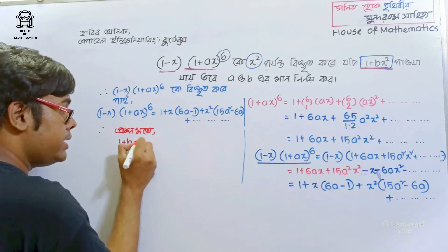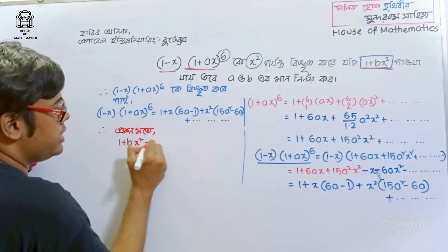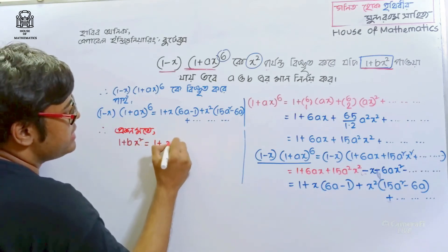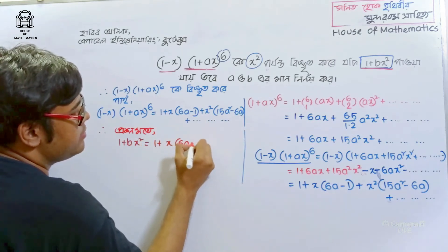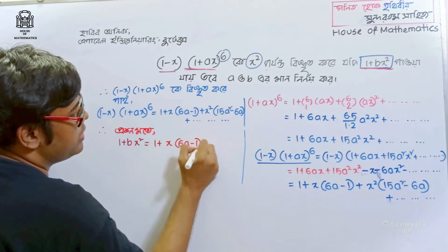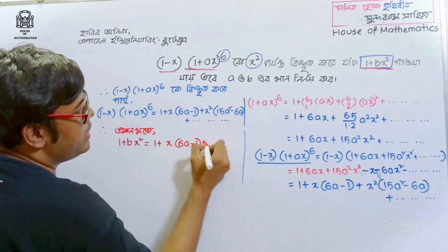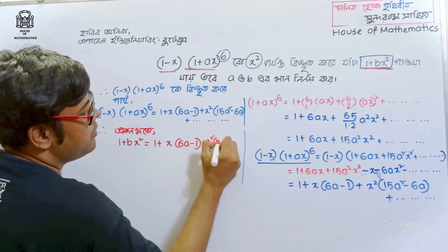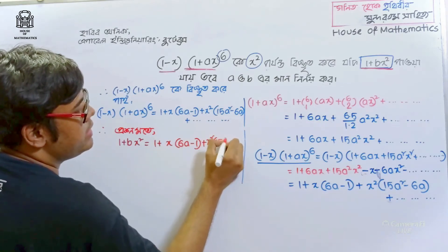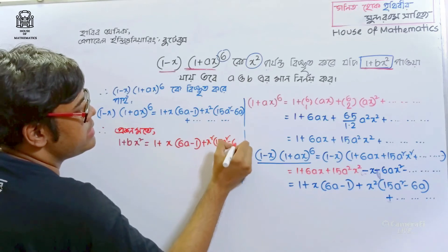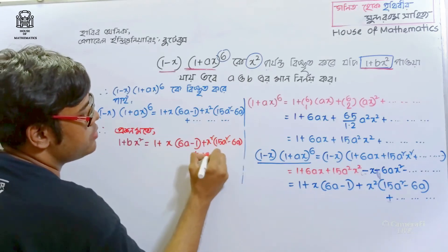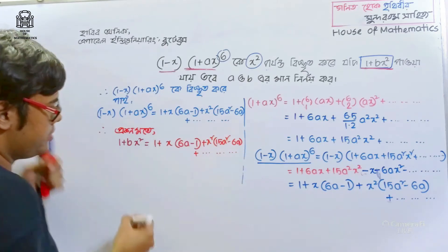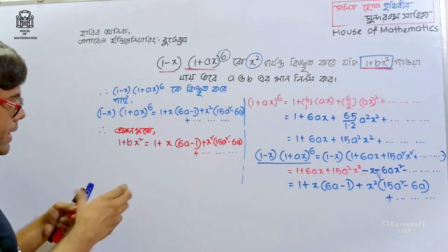So the question tells us: 1 plus bx squared is equal to 1 plus x times 6a minus 1, plus x squared times 15a squared minus 6a, plus dot dot dot.